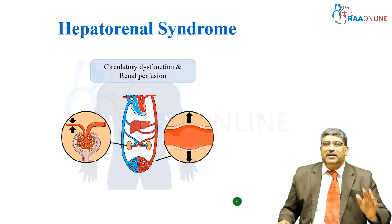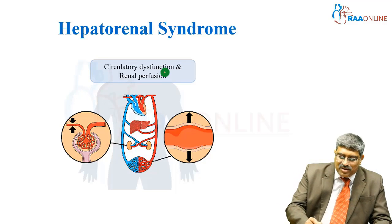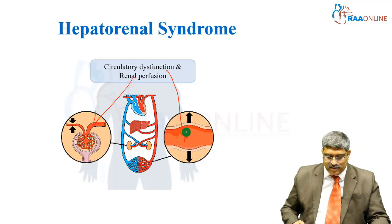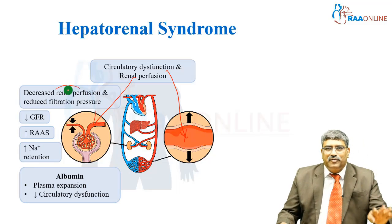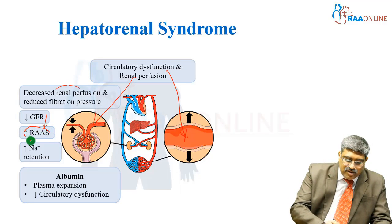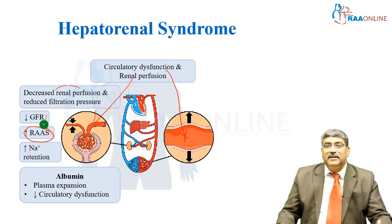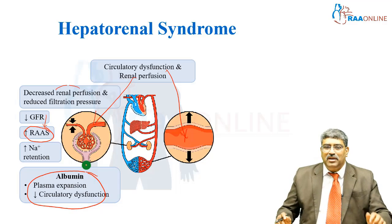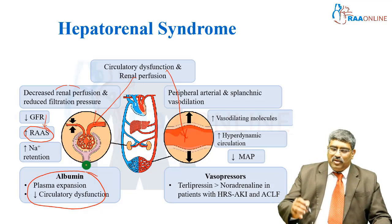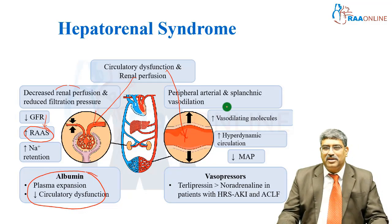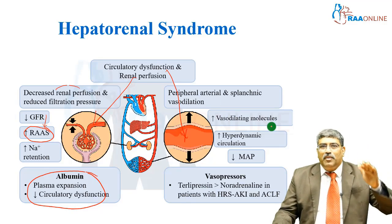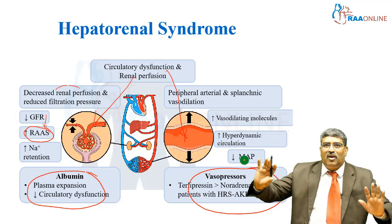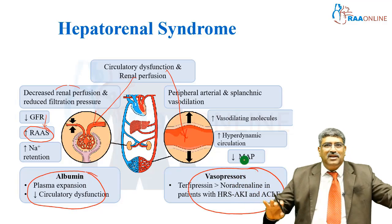In treating hepatorenal syndrome, two mechanisms are addressed. For reduced renal perfusion: there is decreased renal perfusion, reduced filtration pressure, decreased GFR, activation of the renin-angiotensin system, and sodium retention. This can be countered by giving albumin to expand plasma volume and reduce circulatory dysfunction. For the vasodilatation component: there is peripheral arterial and splanchnic vasodilatation with increased vasodilating molecules causing a fall in mean arterial pressure, which requires vasopressors. In summary, you increase pressure with vasopressors and increase volume with albumin.